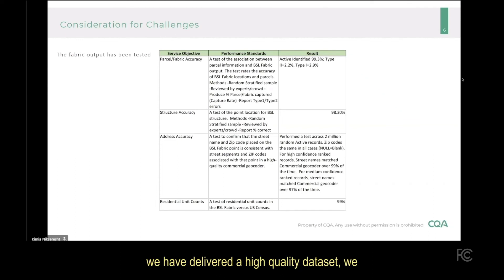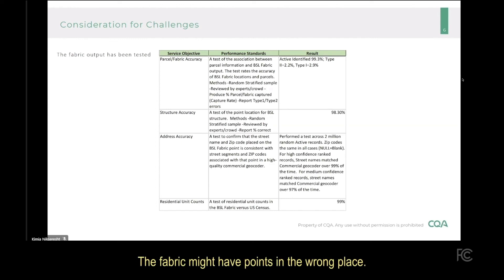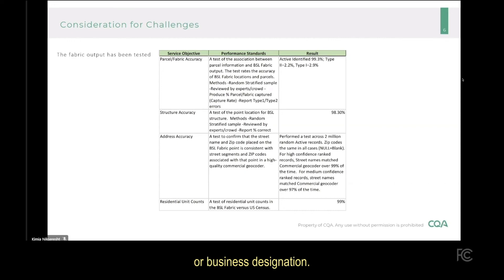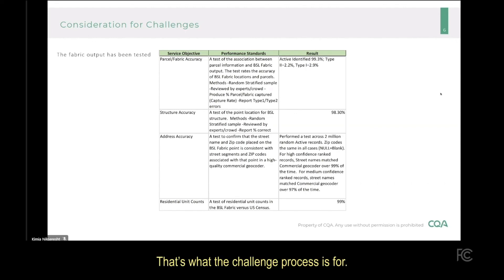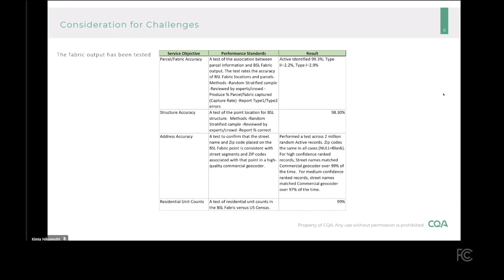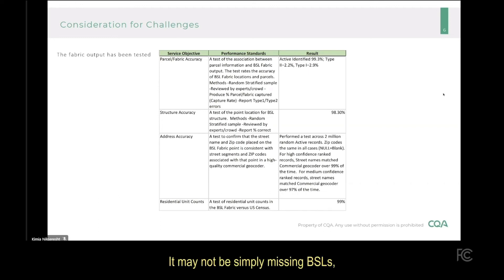We have undertaken an extensive effort to develop the first version of the fabric, and while we believe we have delivered a high-quality dataset, we know it's not perfect. The fabric might have points in the wrong place — for example, we may have picked the garage instead of the house. We may have too few units at a location, issues with the residential or business designation, or an incorrect address. That's what the challenge process is for. But within the limits of the data, we generally have credible sources that align with other data sources. If you're seeing significant issues such as a high count of missing BSLs, you should take a closer look — it may not be simply missing BSLs, but a missing count of units or missing secondary addresses.